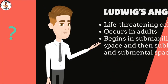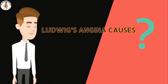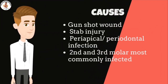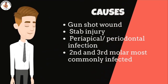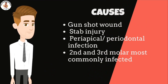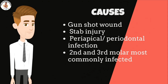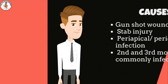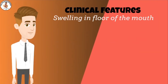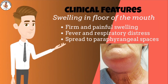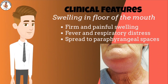Ludwig's angina is caused by a gunshot wound, penetrating stab injury, or patients having periapical and periodontal infection. The second and third molars are most commonly infected. It clinically presents as swelling in the floor of the mouth causing elevation of the tongue. This is a diffuse swelling and it is firm and painful.